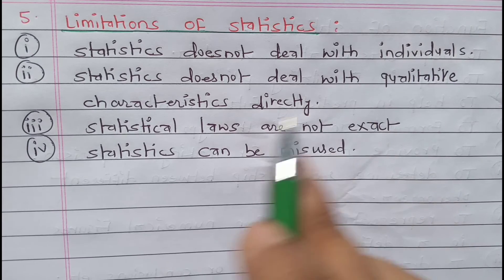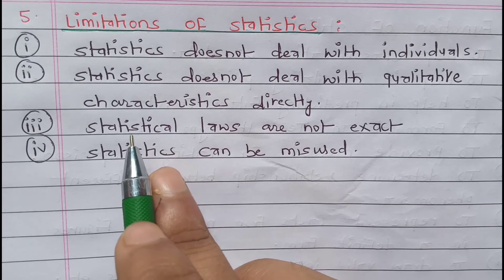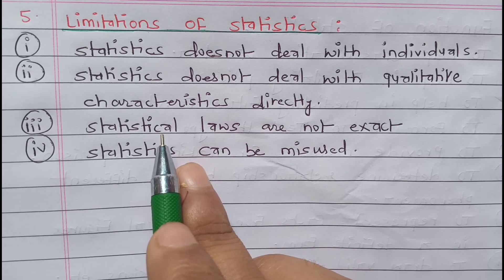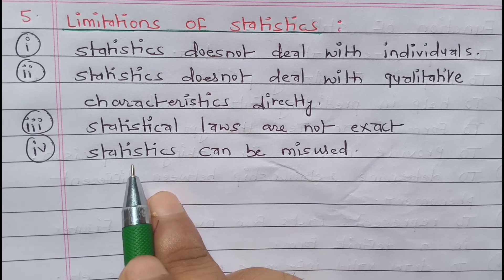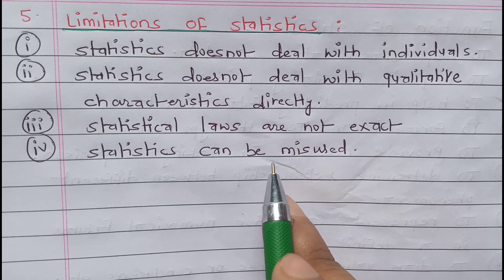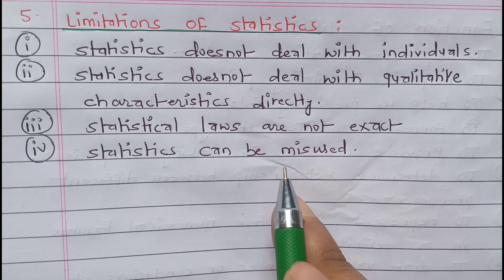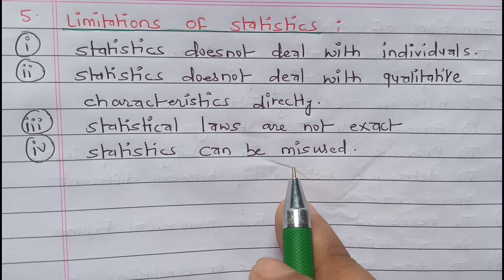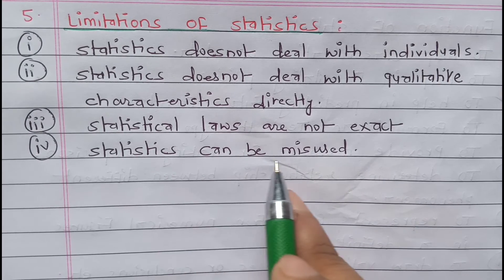Statistical laws are not exact — it is only probability. Statistical laws can never be exact; they can only be probable. Additionally, statistics can be misused. Sometimes statistical data is misused, and it is likely to be misused by non-statistical persons who are not experienced in handling data and interpreting results.